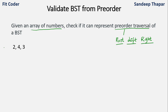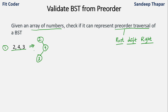Let's check the first example. We are given the set of numbers 2, 4, and 3, and we have to check that this represents a pre-order traversal of a BST. This pre-order traversal can give us a valid binary search tree, so we return true. For the second example, our set of numbers is 2, 4, and 1.